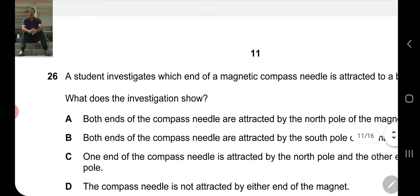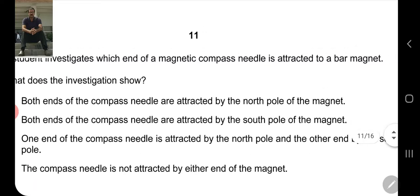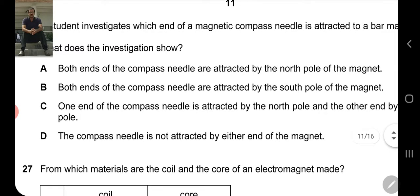Question number 26: A student investigates which end of a magnetic compass needle is attracted to a bar magnet. The compass itself is a magnet. They want to see which end of the magnetic compass is attracted to the bar magnet. Only one end will attract, the other will repel. Option A: Both ends of the compass needle are attracted - this is not correct. Similarly, option B: Both ends attracted by the south pole is incorrect. Only one end will attract, the other will repel.